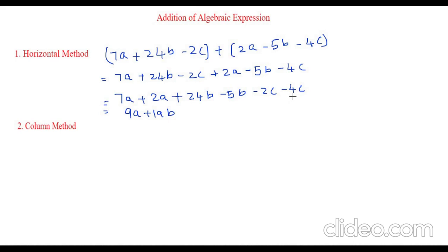Now minus 2c and minus 4c both are the same signs. Same signs have to be added, so that is minus 6c. This is the way we do the horizontal method. Isn't it very easy?